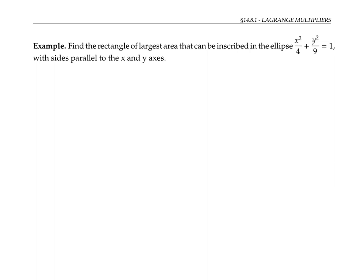Let's start by looking at an example. We want to find the rectangle of largest area that can be inscribed in the ellipse with this equation. We want to consider inscribed rectangles whose sides are parallel to the x and y axes, and find such a rectangle with maximum possible area.